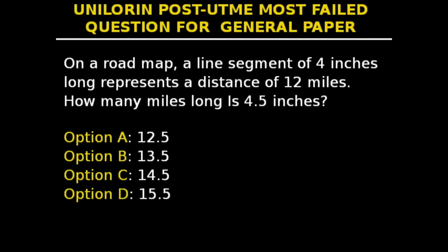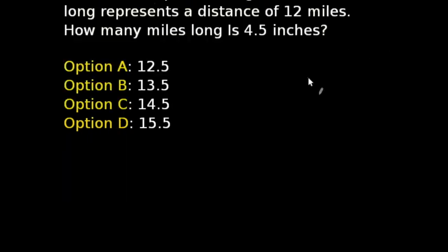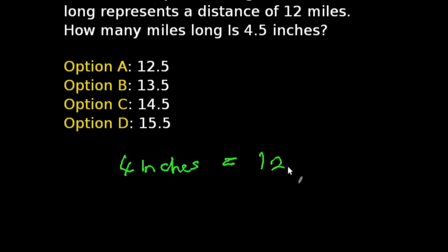Hello guys, this is question 34 in our most-failed Unilorin Post-UTME questions for the RR paper series. It says: on a road map, a line segment of 4 inches long represents a distance of 12 miles. How many miles long is 4.5 inches? From our question, 4 inches equals 12 miles.